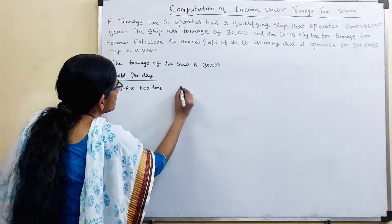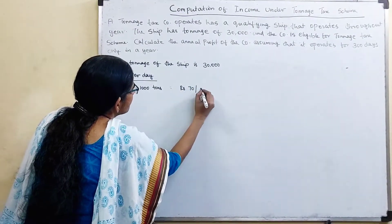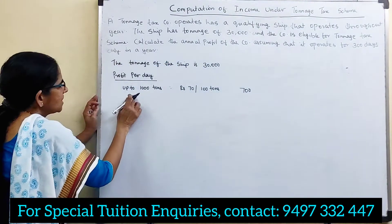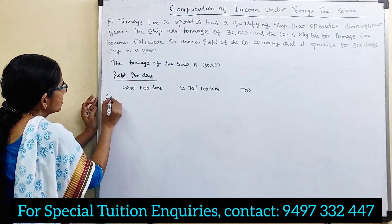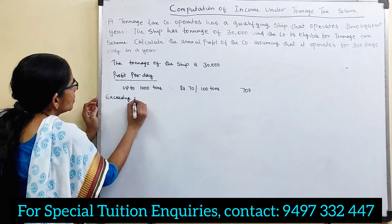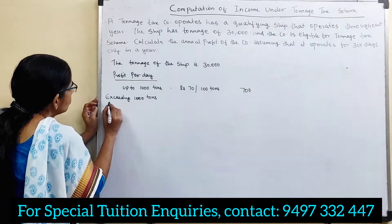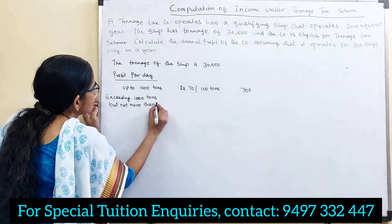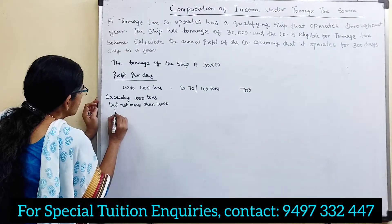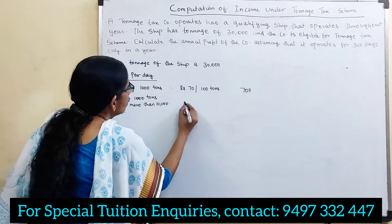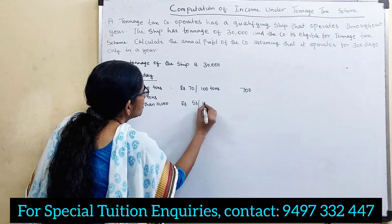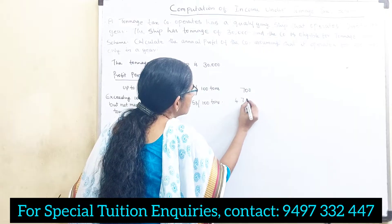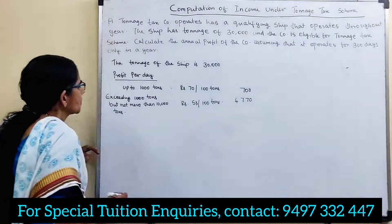Exceeding 1000 tons but not more than 10,000 tons. 9,000 tons, rupees 53 per 100 tons, that is equal to 4,770.